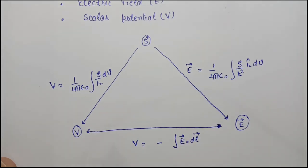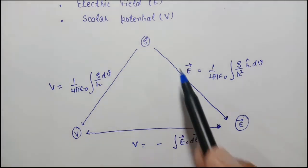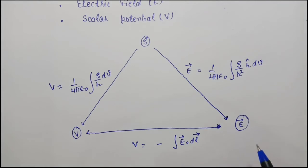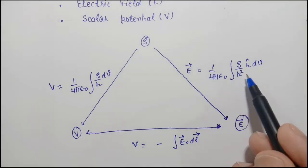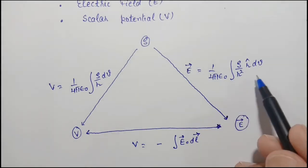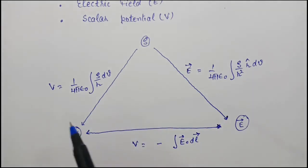So these three are the integral relations between these components — that is, one between rho and E: E equals 1 over 4πε₀ ρ/R dV; and between E and V: V equals minus ∫E·dL. These are the integral relations.